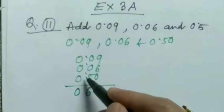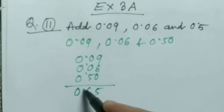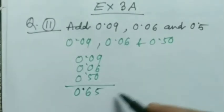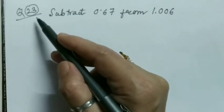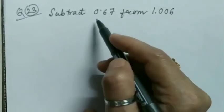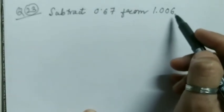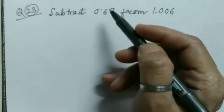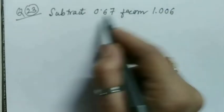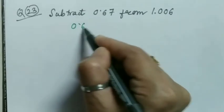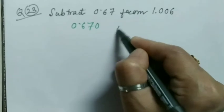Next, question number 23: subtract 0.67 from 1.006. So step one is the conversion as before. I'm writing here 0.670 and this one is 1.006. Now these are like decimals.